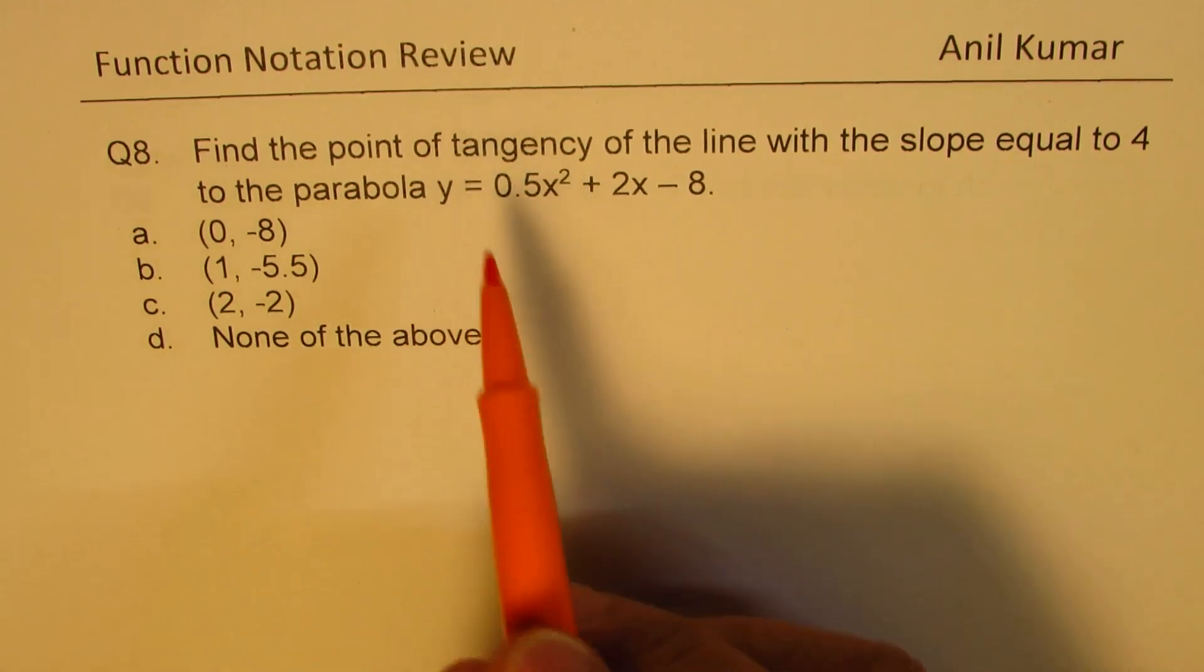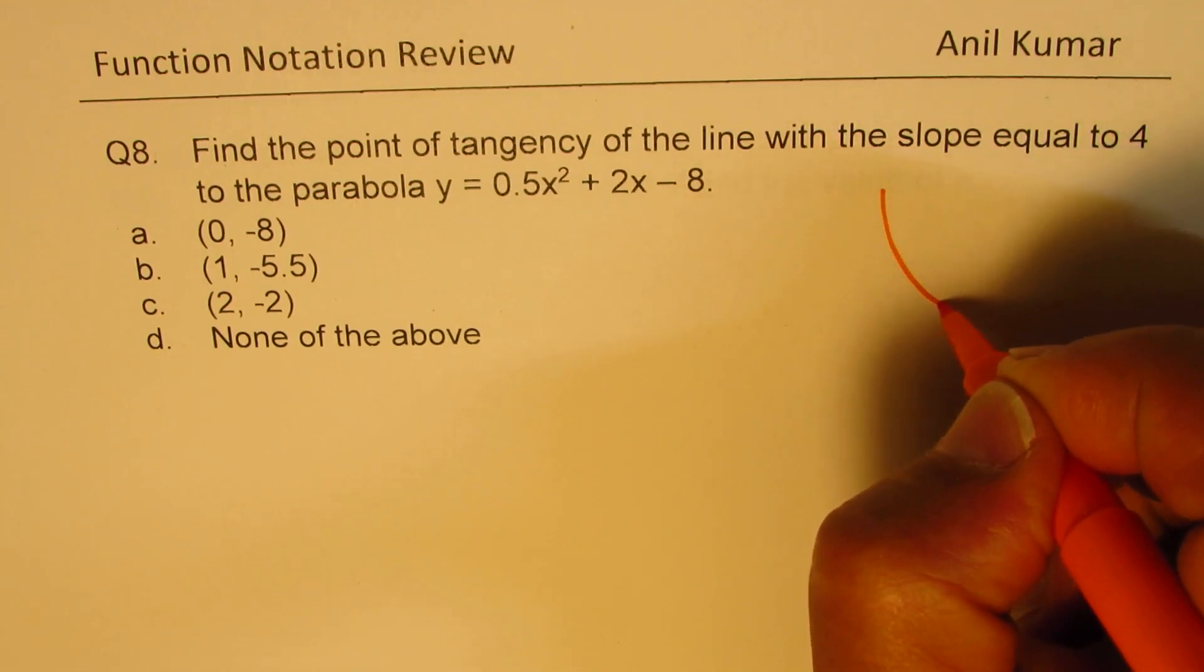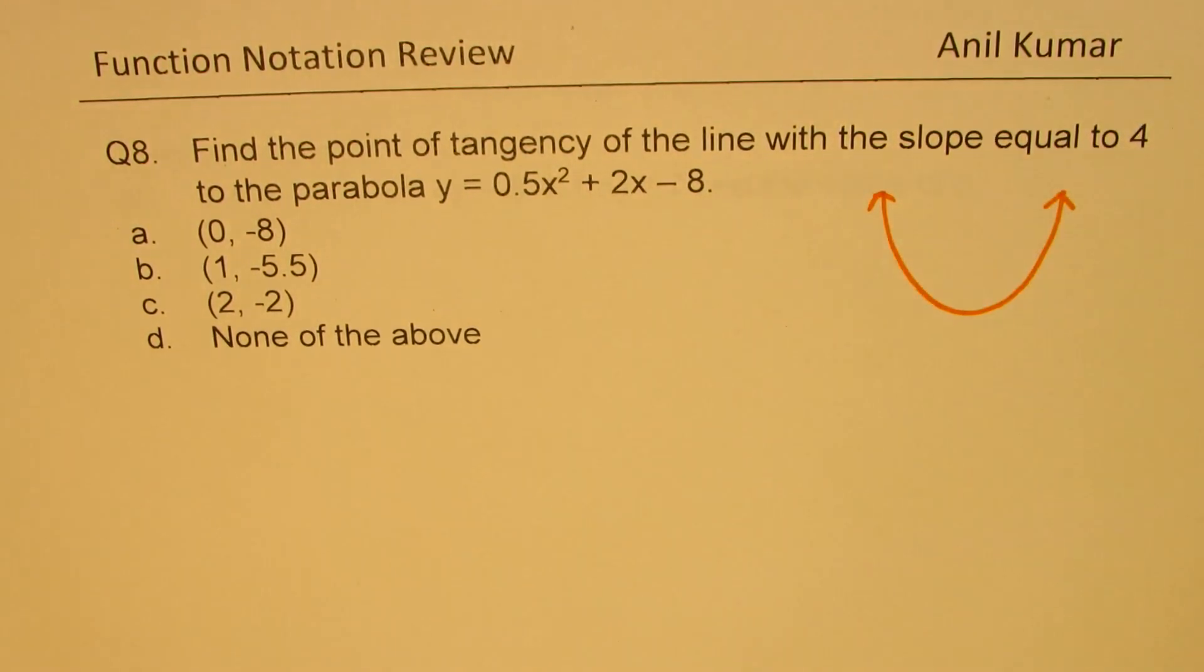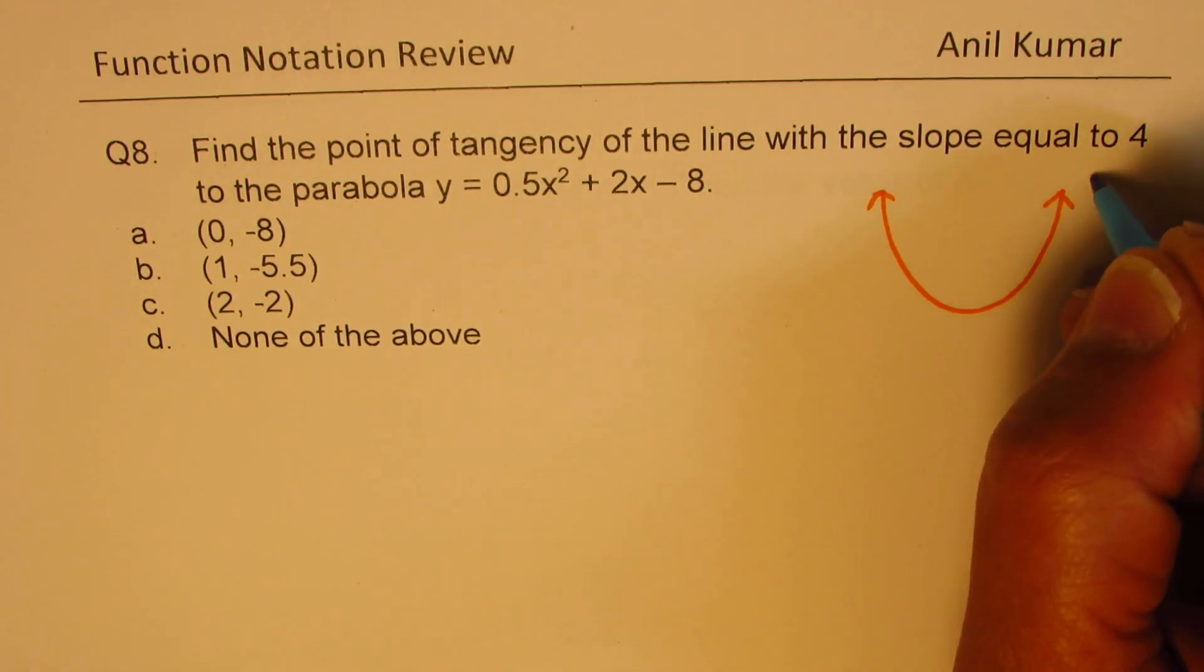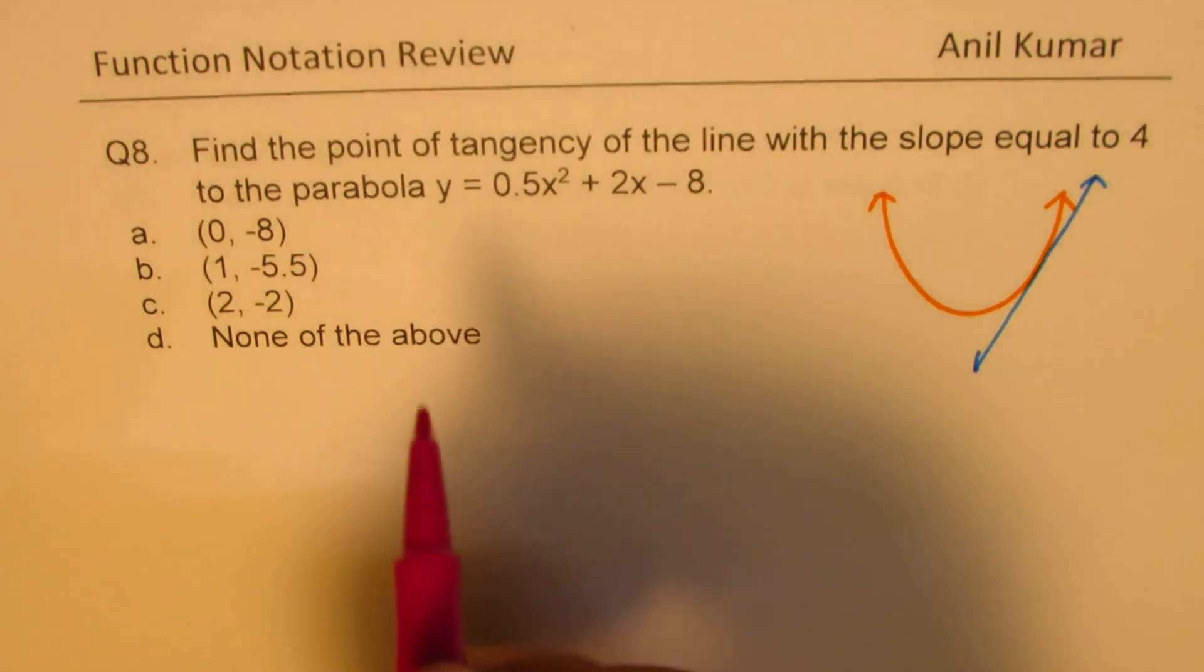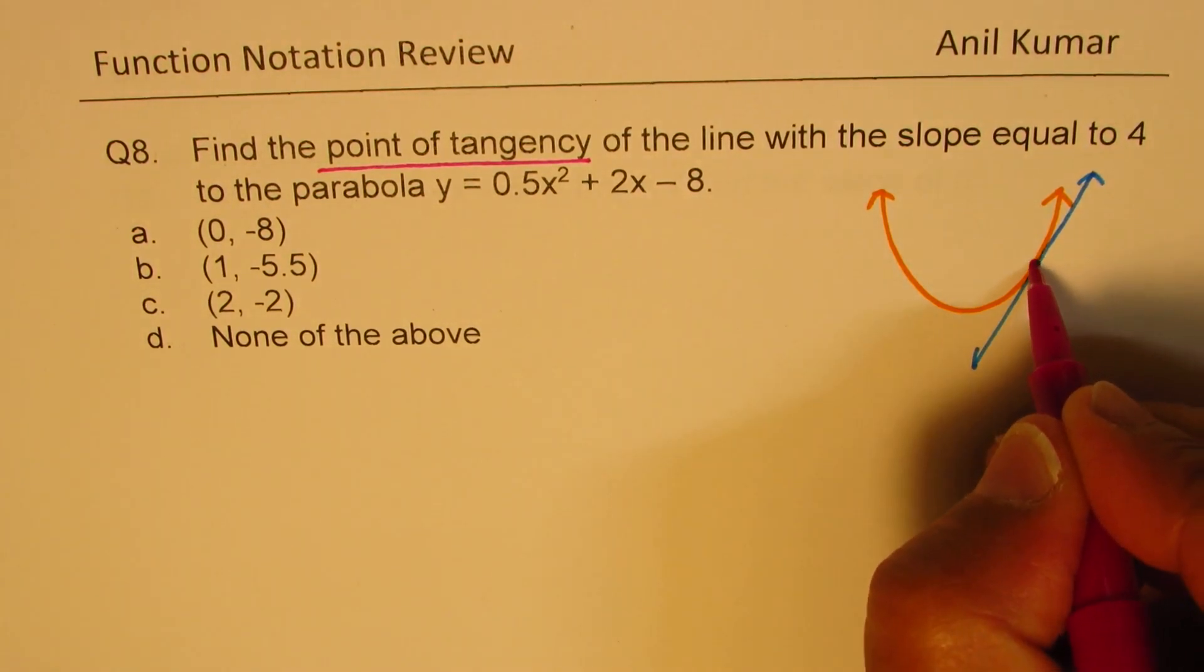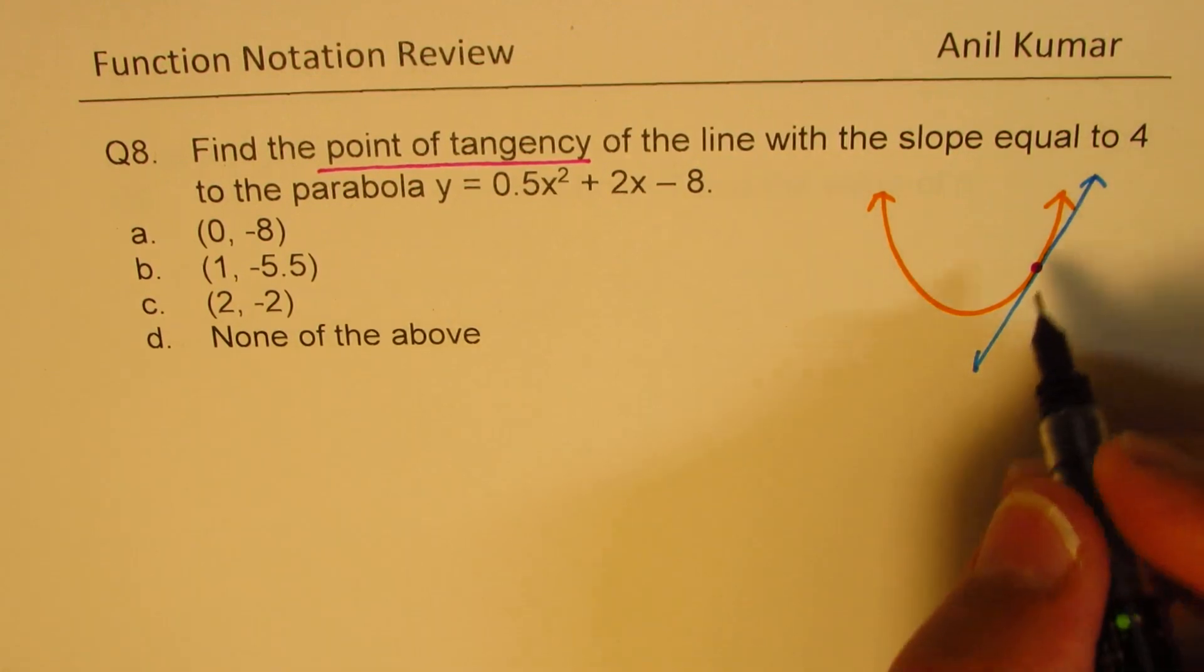So basically, let's try to understand it. We have a parabola which opens upwards, so it would be kind of like this. And a line which is tangent has a slope of positive 4. So it is on this part of the parabola.